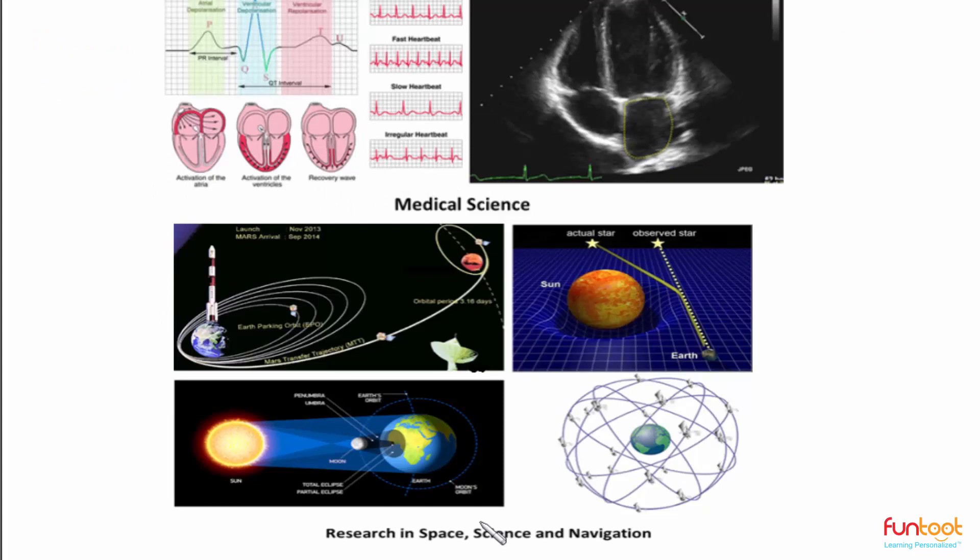Next, let's take Research in Space Science and Navigation. How do we calculate the path for space missions such as Mangalyan? We use Coordinate Geometry for this. Our ability to precisely define the positions of Sun, Moon and Earth at a time helps us in predicting solar and lunar eclipses. Also, Coordinate Geometry helps in navigation and long distance travel.